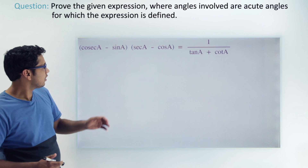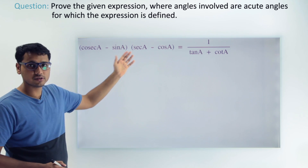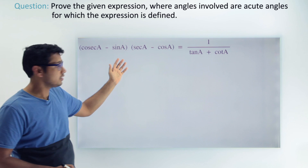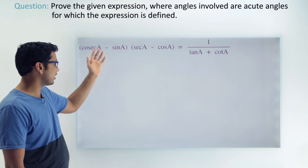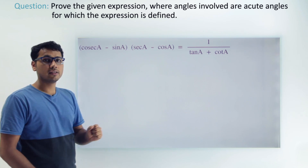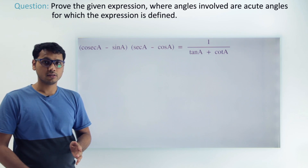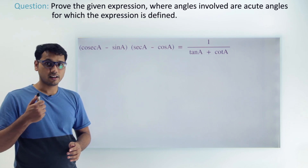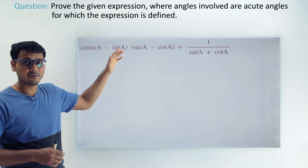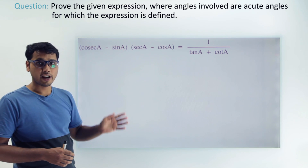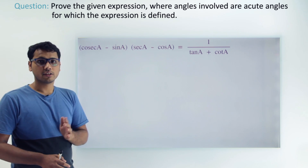If we look at the LHS, we could try multiplying the brackets and get cos a into sec a, but even if we multiply these two we won't get anything useful. So let's apply a key concept: if we get stuck somewhere, we just change every trigonometric function into sin and cos.